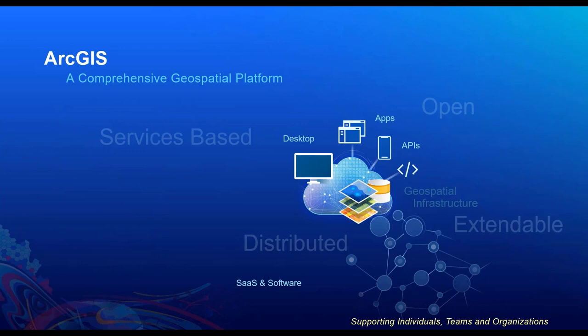It all begins with the ArcGIS system. ArcGIS is a comprehensive geospatial platform. Traditionally, many of you may have thought of using GIS as a system of record to help you maintain a specific type of data. But today, GIS is services-based. It's open, distributed, and extendable, and it supports many different types of activities, including collaboration and community engagement. It supports not only individuals, but teams and organizations.